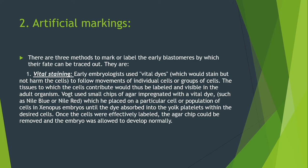The tissues to which the cells contribute would thus be labeled and visible in the adult organism. Vogt used small chips of agar impregnated with a vital dye — he dipped or applied dye onto a small agar chip — which was placed on a particular cell or population of cells in Xenopus embryos until the dye was absorbed into the yolk platelets within the desired cells. Once the cells were effectively labeled, the agar chip was removed and the embryo was allowed to develop normally.